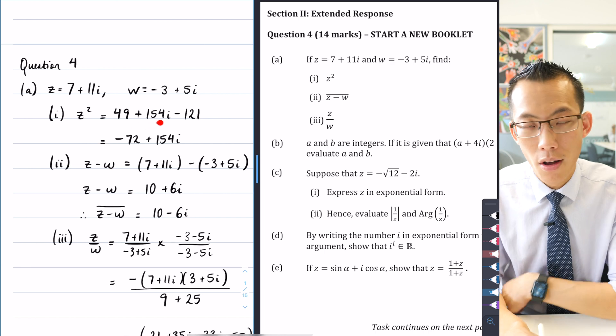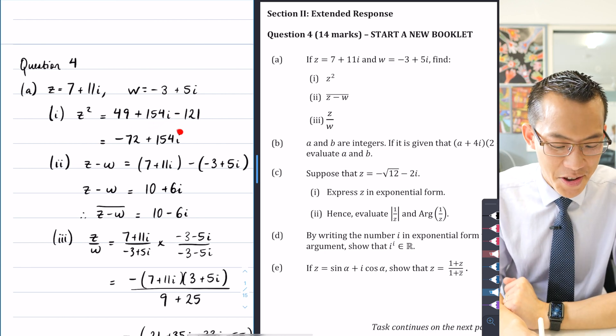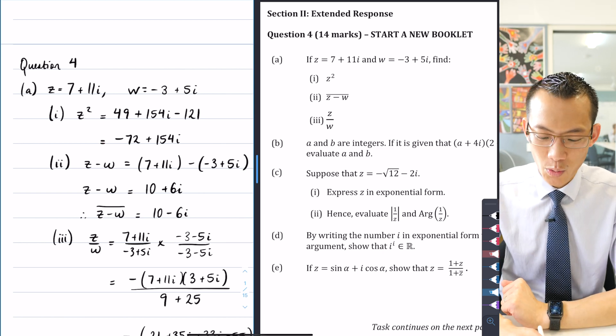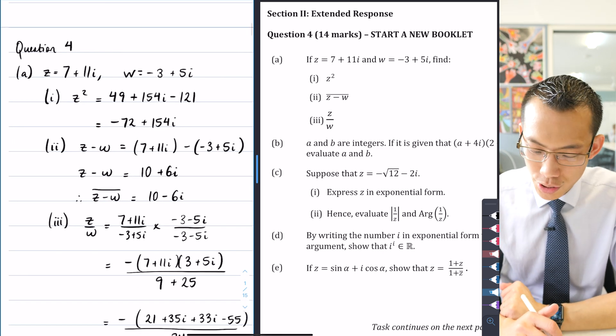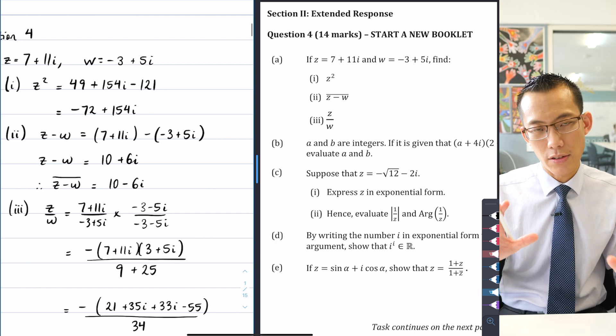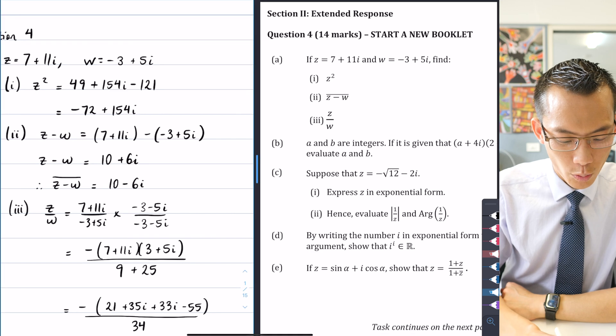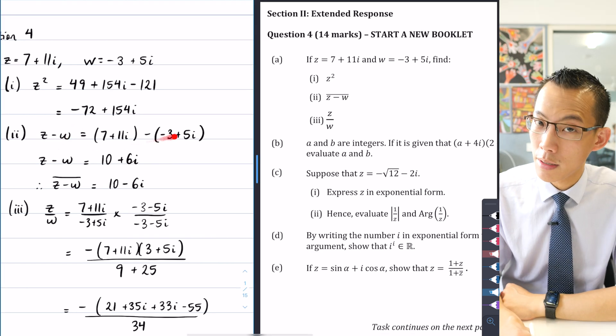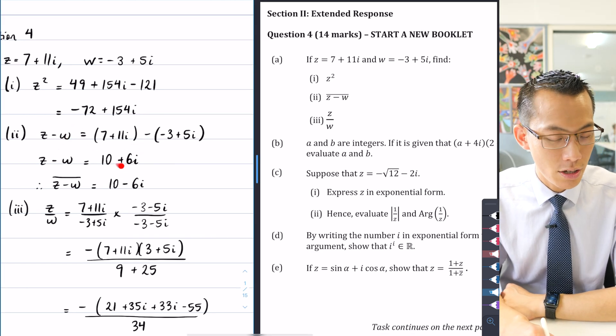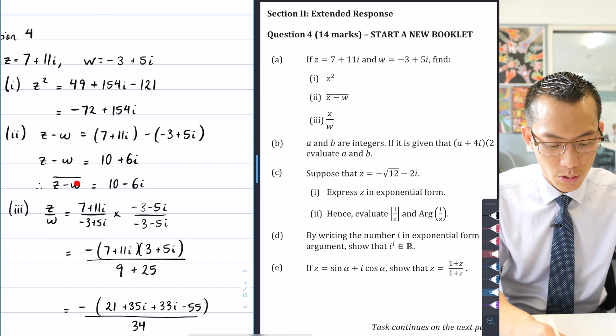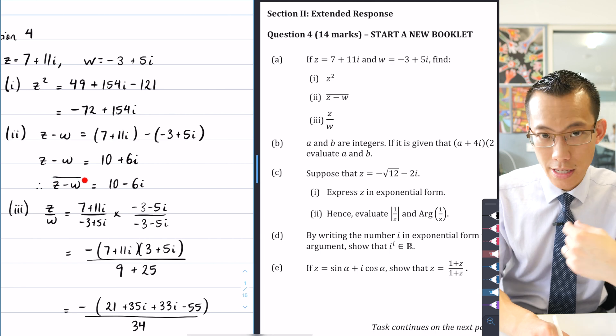When you have a look at part 2, you can see in my working I've done this in two parts. Firstly, I've said you want z take away w, so that's what I started working out over here. This is just my straight substitution, and then I've collected like terms, real and imaginary parts. But then secondly, I noticed the question is also asking for the conjugate of z - w, so that's me taking the imaginary part and just flipping the sign. So that's part 2.